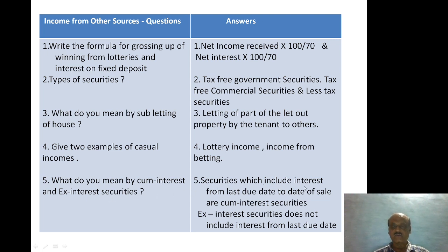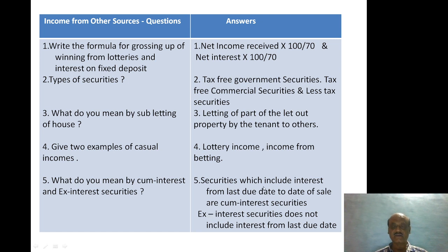Securities which include interest from the last due date to the date of sale are called cum-interest securities. Ex-interest securities are the securities which do not include interest from the last due date — that is, interest is excluded in ex-interest securities, whereas it is included in cum-interest securities.